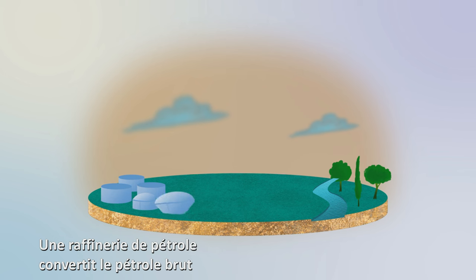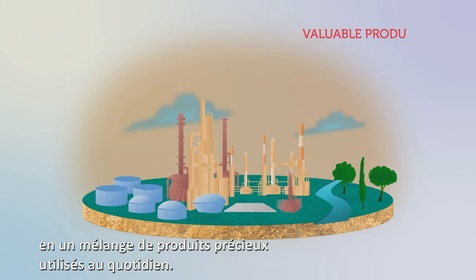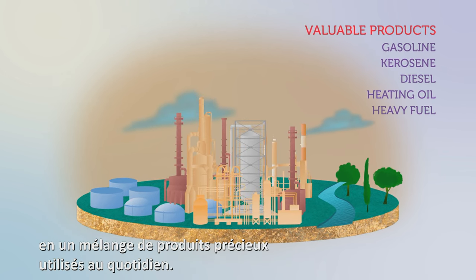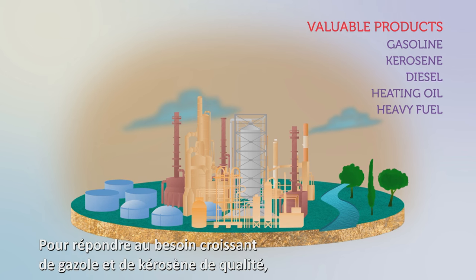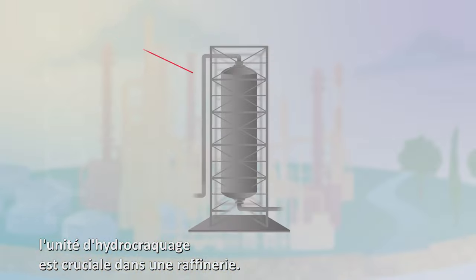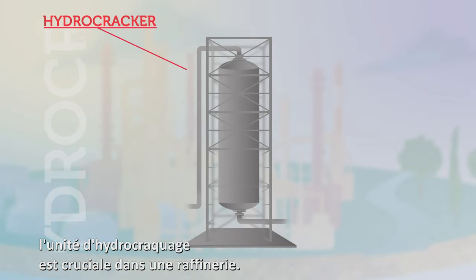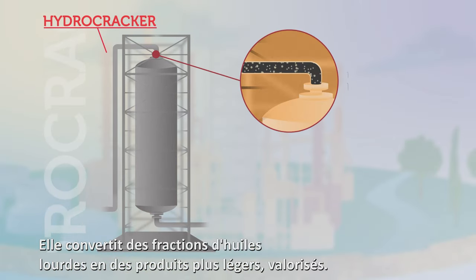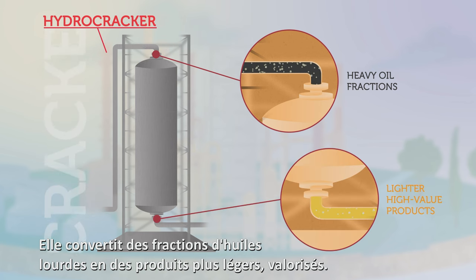An oil refinery optimally converts crude oil into a mix of valuable products that we use in our everyday lives. To meet the increasing demand for high quality diesel and kerosene, one key unit in a refinery is the hydrocracking unit. Such a unit upgrades heavy oil fractions into lighter high value products.